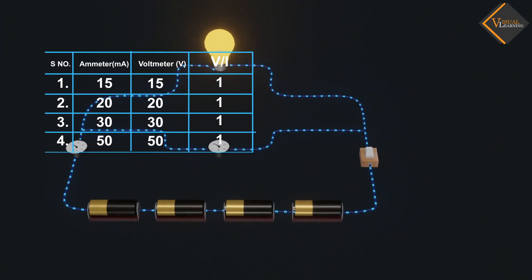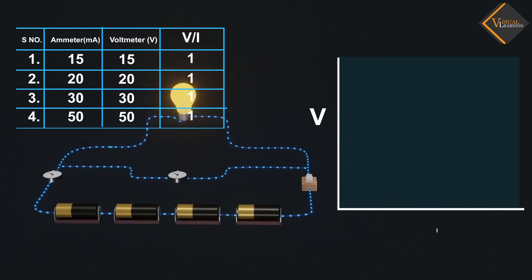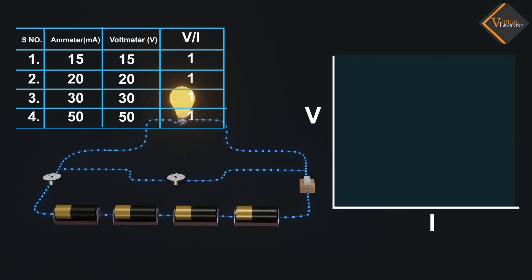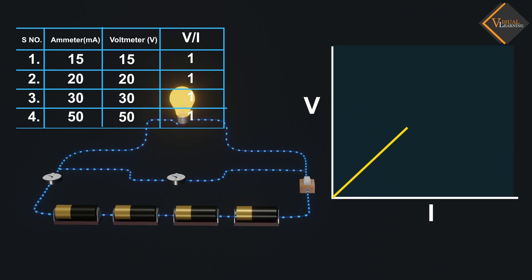If we plot a graph between voltage and current with these values, we will observe that current increases directly proportional with voltage.